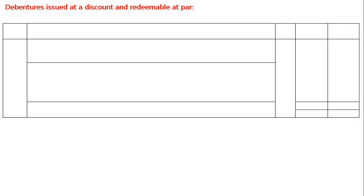The question is: pass necessary journal entries for issue of debentures in the following cases. Case A: rupees 40,000, 15 percent debentures of 100 issued at a discount of 10 percent, redeemable at par. This is issued at a discount and redeemable at par.